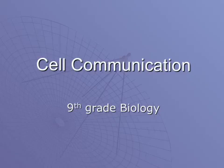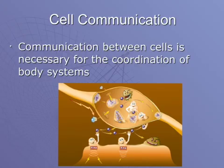Before we start talking about all the different systems of the body, we need to talk about cell communication, and this is why. Cells need to be able to communicate with one another to actually coordinate all those different body systems. Cell communication allows not only different systems to communicate with one another, but also cells within the same system, within the same tissues, within the same organs.